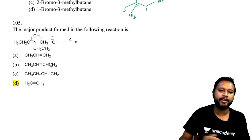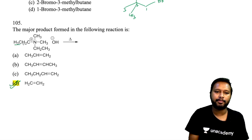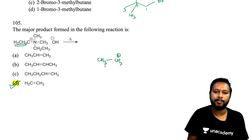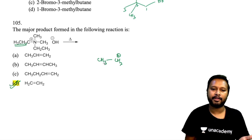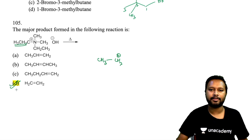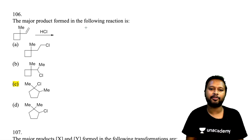Question 105: a quaternary amine is treated with base and heated (Hofmann elimination conditions). The reaction eliminates H⁺ and forms a CH₃–CH₂ carbocation equivalent; one hydrogen is removed from the methyl part and a double bond forms. Correct option is D.